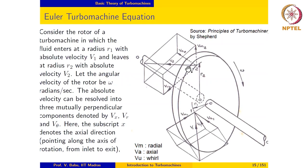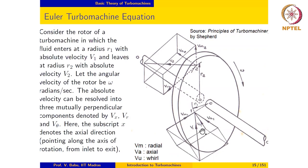Consider the rotor of a turbo machine shown here. This rotates with an angular velocity omega in the clockwise direction. Fluid enters this rotor with an absolute velocity V1 and leaves with an absolute velocity V2. The absolute velocity has components in three directions: radial, axial, and tangential, also known as the whirl component. The component of velocity in the radial direction moving outwards from the shaft is referred to as the radial velocity.